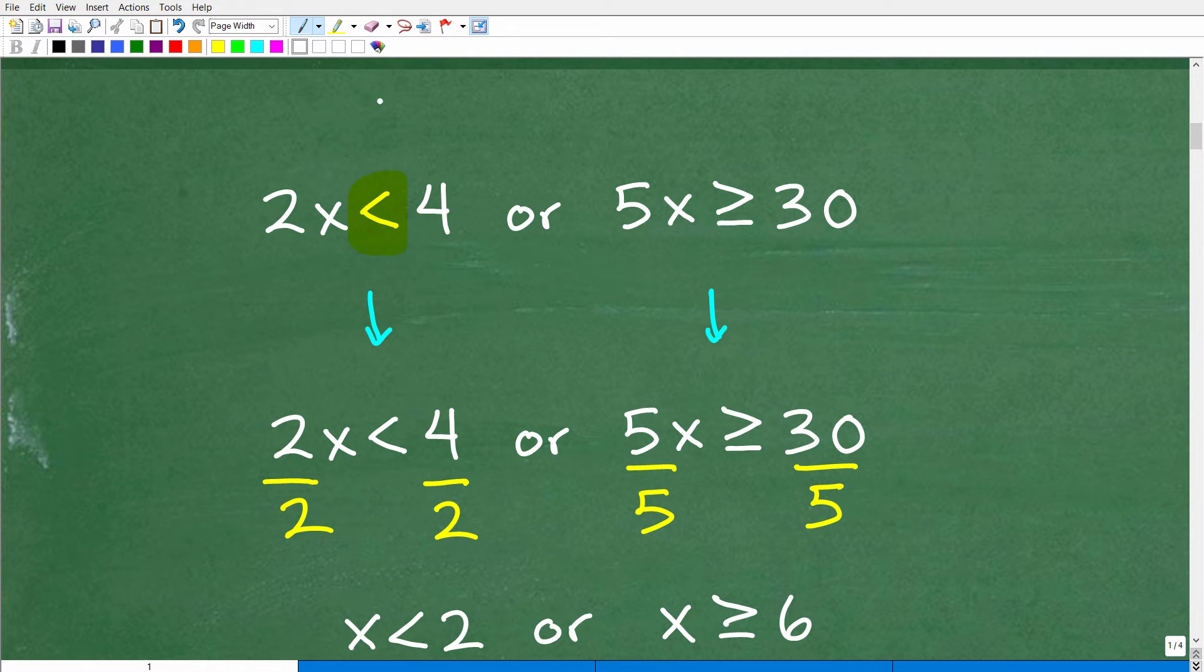This is the less than symbol. Notice it looks kind of like an L, like a slanted L. So, if you're confused, oh, is that less than or greater than? The one that looks like an L like this is less than. So, the other one going in this direction is greater than. So, we have 2x is less than 4 or 5x is greater than or equal to 30. So, this is an example of what we call a compound inequality. And when you start learning basic inequalities in algebra and pre-algebra, you start off with simple, what we call linear inequalities, and then you kind of move up to what we call compound inequalities.